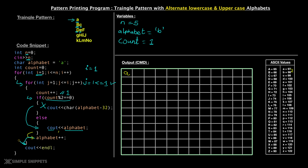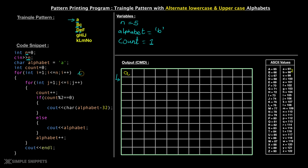After this, we come to the end of the inner for loop and go back to the start. J becomes plus plus, so j becomes two. Is two less than or equal to i, which is one? Two is greater than one, so we exit outside this inner for loop and execute the last statement of the outer for loop, which is cout endl. That brings us to the next line on the command prompt. Then we go to the start of the outer for loop, i becomes i plus plus, and i becomes two.